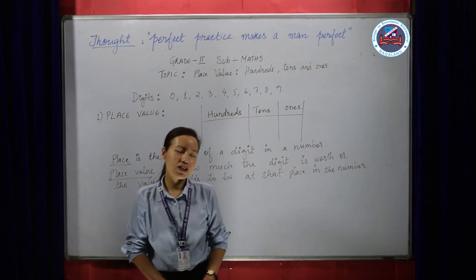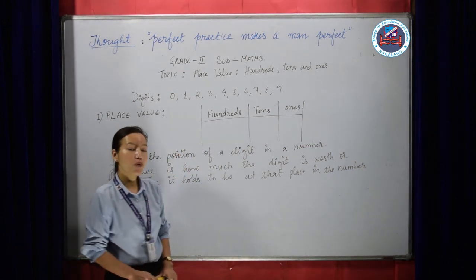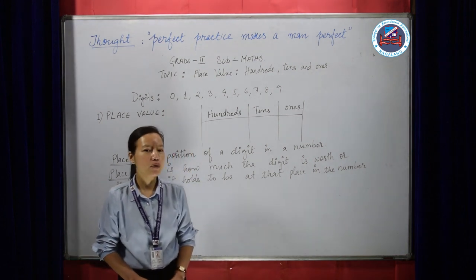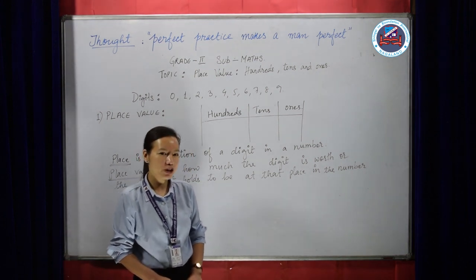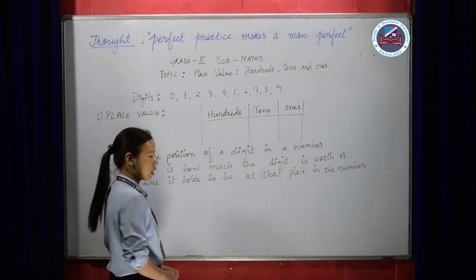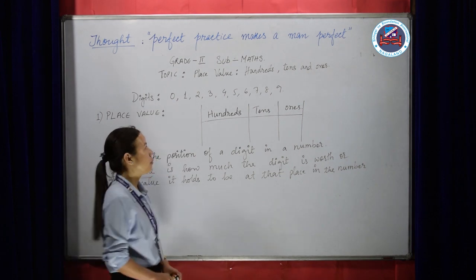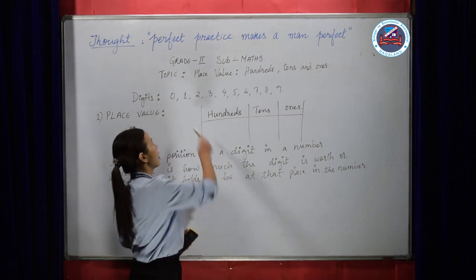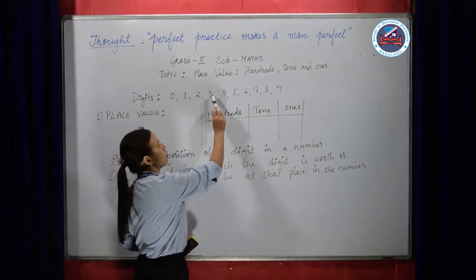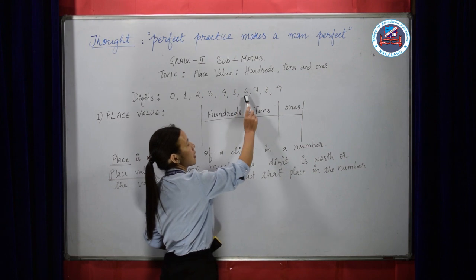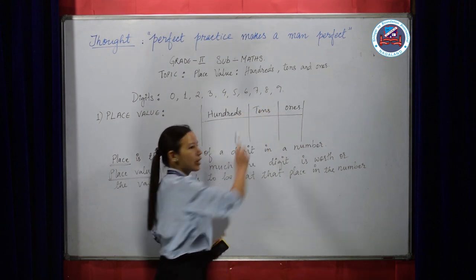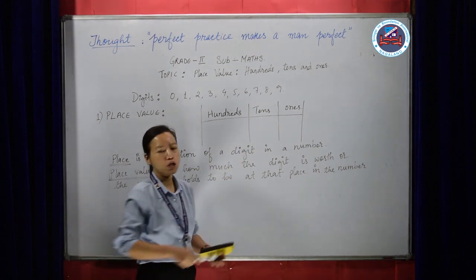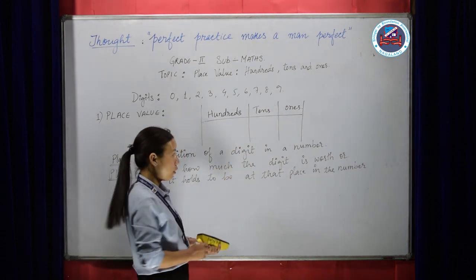So let's get into it. Now before we begin with place value, first we will try to understand what you mean by digits. So digits is a number from 0 to 9, that is the numbers 0, 1, 2, 3, 4, 5, 6, 7, 8, and 9. These are called the digits and we use these digits to form a number.